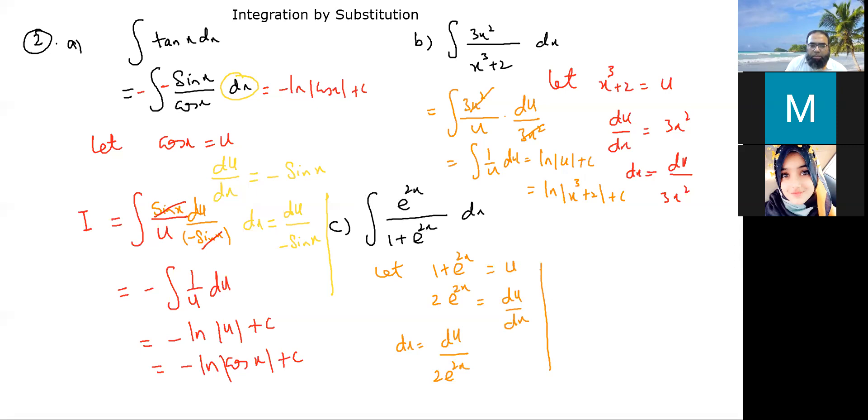Now, this dx will become du over 2 e raised to the power 2x, okay? Now, I put them into this here. So, this is going to be e raised to the power 2x over u into du over 2 e raised to the power 2x. So, they are canceled, okay? So, you have half into 1 over u. Look how cool this is. This is going to be half ln u, okay? So, I have just used your understanding about these integrals resulting into something in terms of log, okay? So, I'll build on this the concept of integration by substitution, okay?